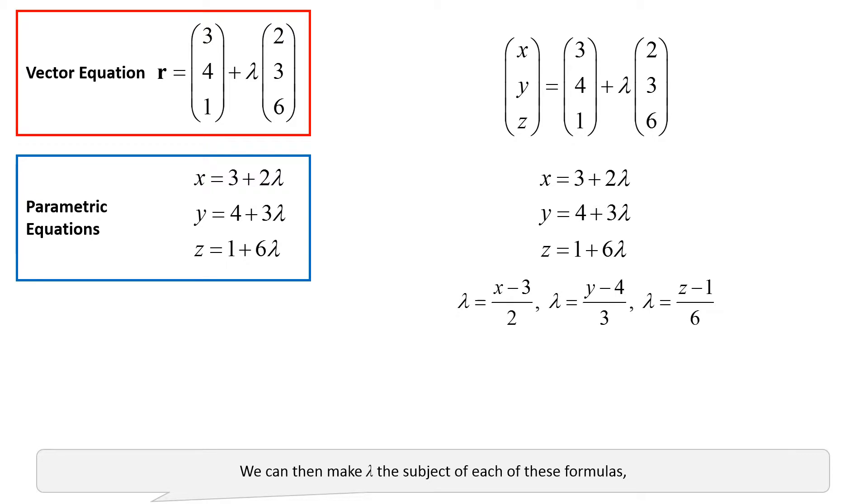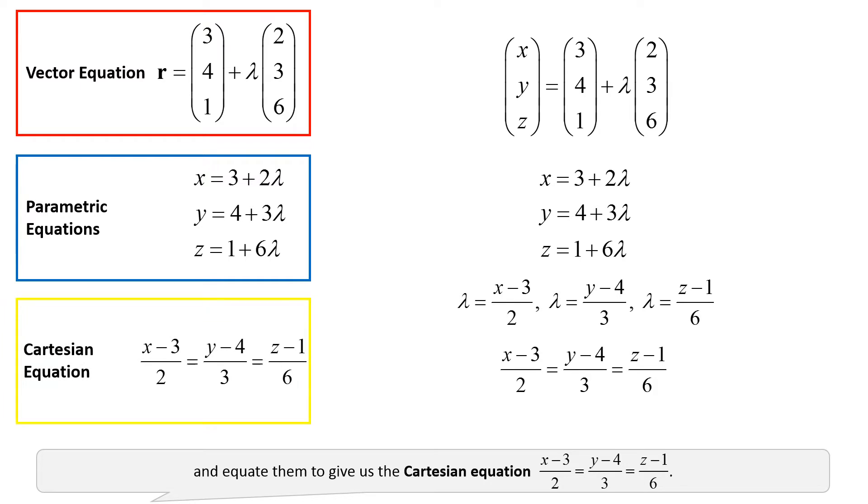We can then make lambda the subject of each of these formulas and equate them to give us the Cartesian equation: x minus 3 divided by 2 equals y minus 4 divided by 3 equals z minus 1 divided by 6.